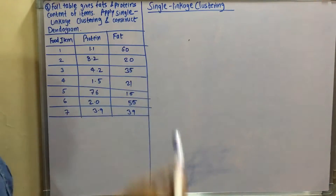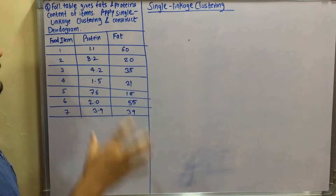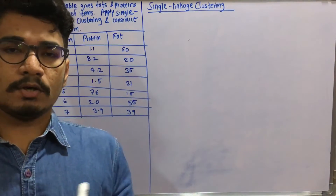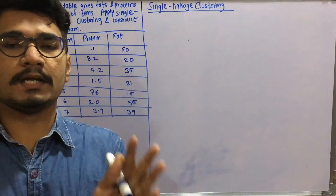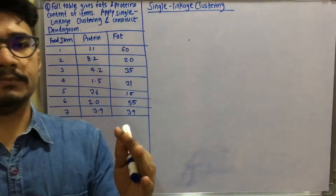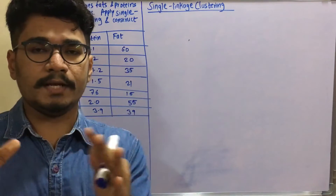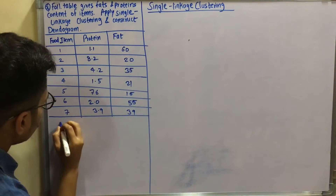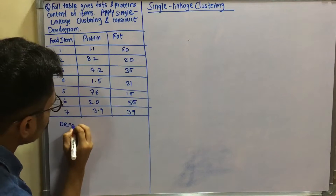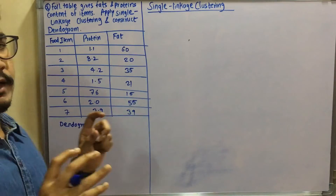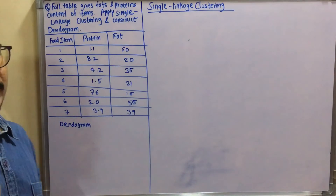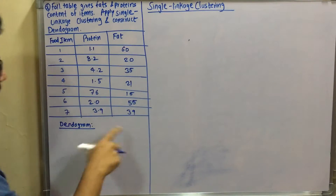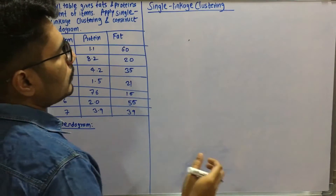We've been given a table of fat and protein content of food items. We have to apply single linkage clustering and construct a dendogram. A dendogram is a chart or graph that shows the hierarchy or linkage of different items — in this case, food items. We'll be constructing the dendogram progressively after each calculation step, so it won't be a hectic task at the end.